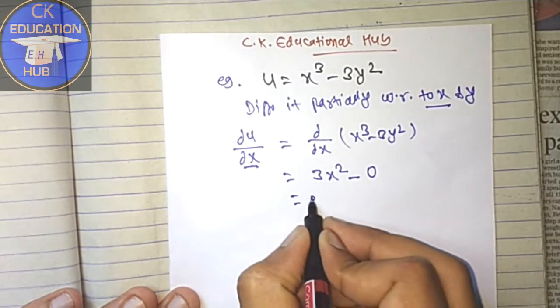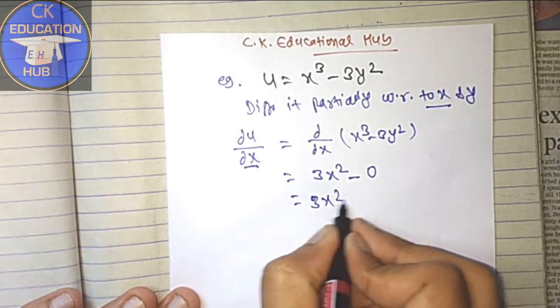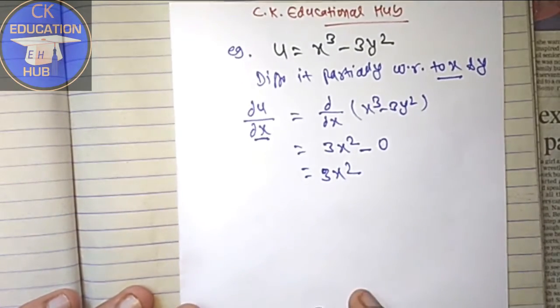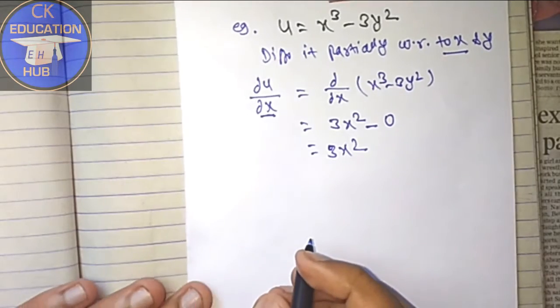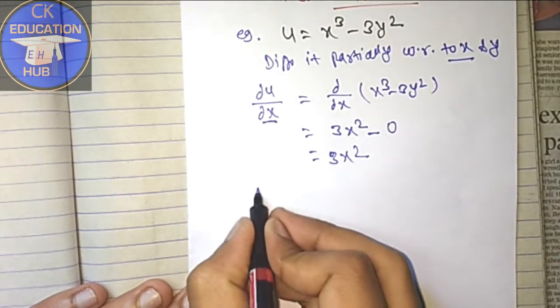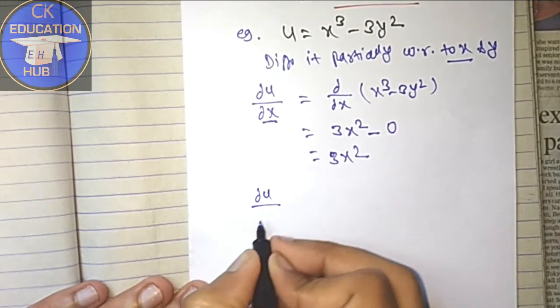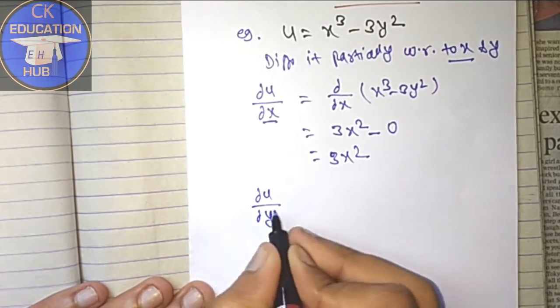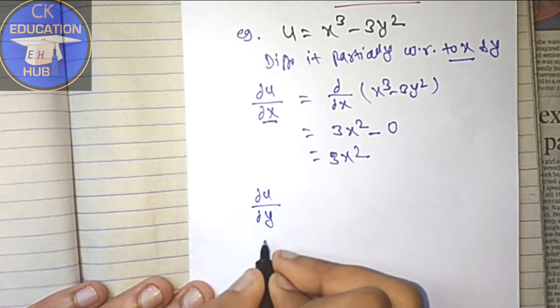So del u / del x = 3x² is the answer. Again, we will differentiate it with respect to y, then del u / del y.